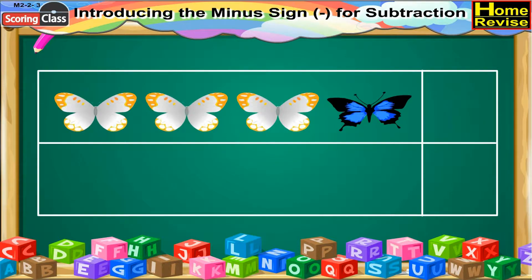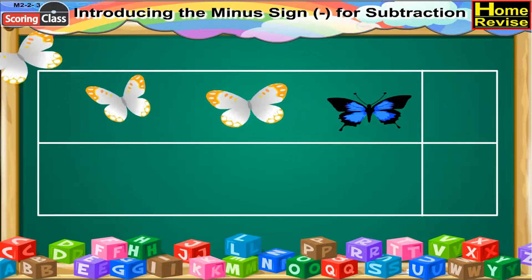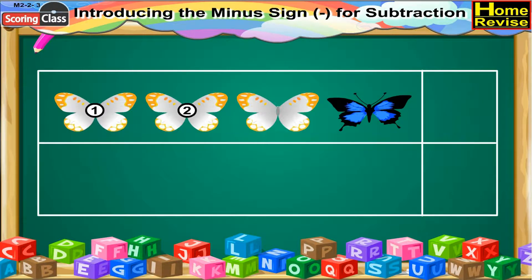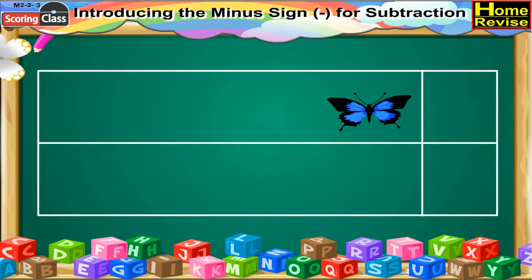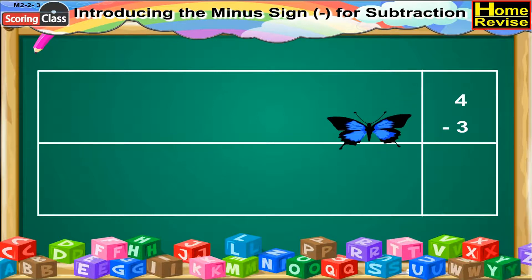In this segment, first let us count the total number of butterflies. There are one, two, three, four. So, there are four butterflies. Let us see how many of the butterflies flew away — they are one, two, three. So, three butterflies flew away. Now, we will find the number of butterflies left. That would be four minus three. So, the answer is one.